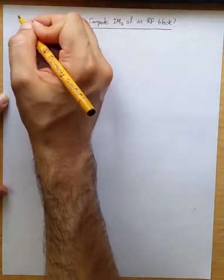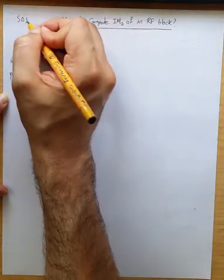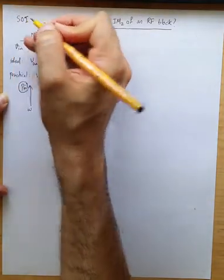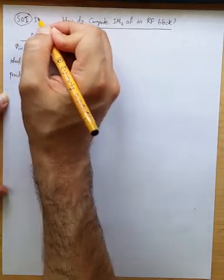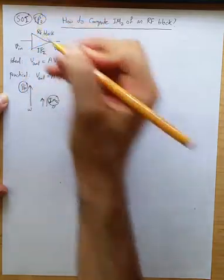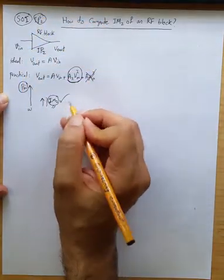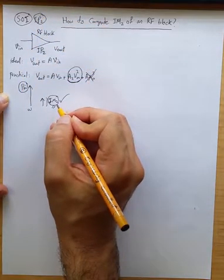So this is referred to as SOI sometimes like second order intercept intermod product or something like that. So it can be that or IP2. So we want to get an idea about the power of this second order intermodulation product.